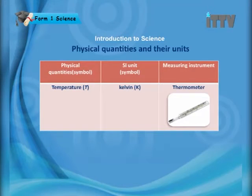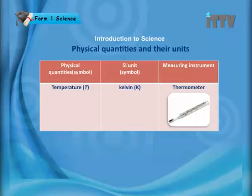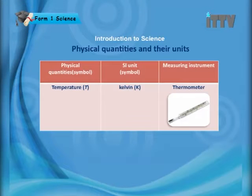The physical quantity temperature is symbolized by a capital T. The SI unit for temperature is Kelvin, written as a capital K. The tool used to measure temperature is a thermometer. The thermometer shown contains mercury and can measure body temperature.